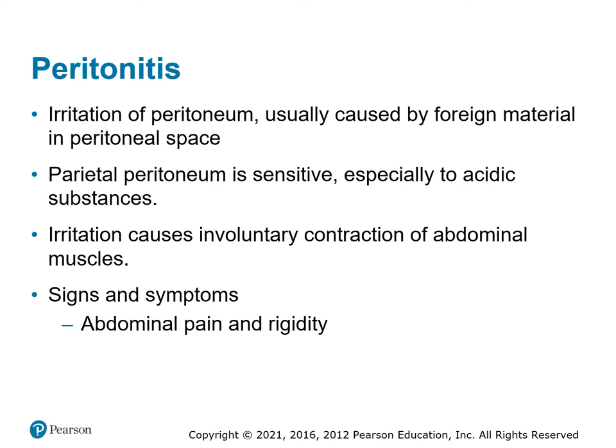Peritonitis — some foreign substance in the peritoneal space, maybe from a leaked ulcer or an infection, causing irritation to the parietal peritoneum. They have involuntary contractions of the abdominal muscles — it's rigid. When you push on it, it's super firm, rock solid — not because they've been doing ab exercises, but involuntary guarding.